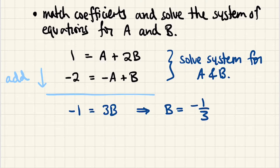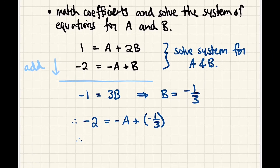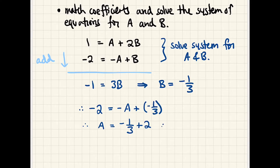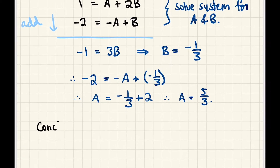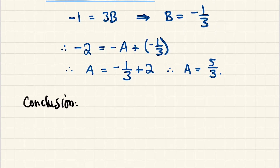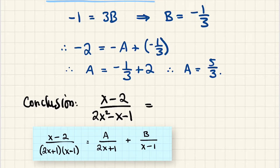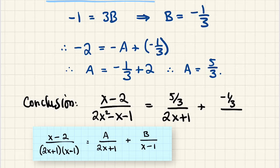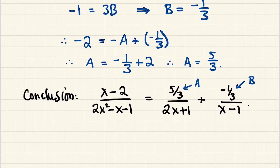Since B equals negative one-third, we return to the equation negative 2 equals negative A plus B. Therefore A equals negative one-third plus 2, which gives A equals five-thirds. Our conclusion is that x minus 2 over 2x squared minus x minus 1 equals five-thirds over (2x plus 1) plus negative one-third over (x minus 1). That was partial fraction decomposition — exactly the opposite of combining two rational expressions in algebra.